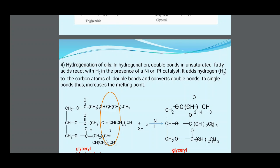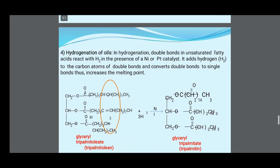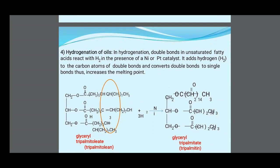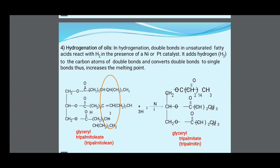Hydrogenation of Oils: In hydrogenation, double bonds in unsaturated fatty acids react with hydrogen in the presence of nickel or platinum catalysts. Hydrogen is added to the carbon atoms of the double bond, converting double bonds to single bonds, thus increasing the melting point. For example, glycerol trioleate is converted to glycerol tripalmitate.